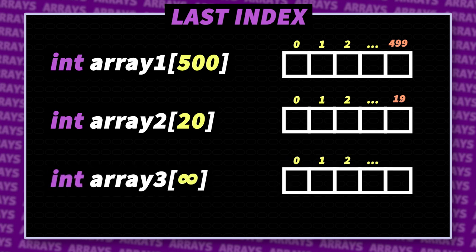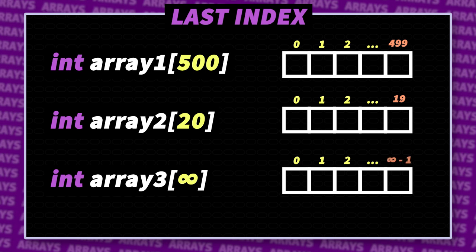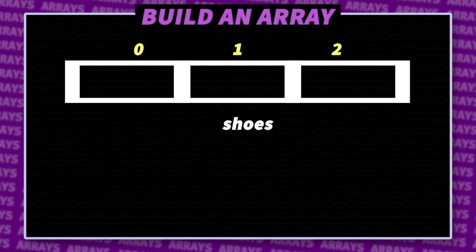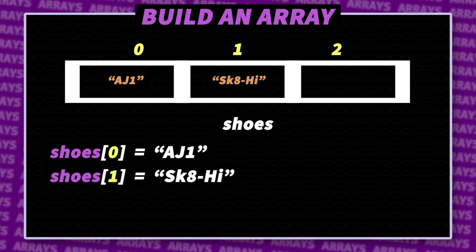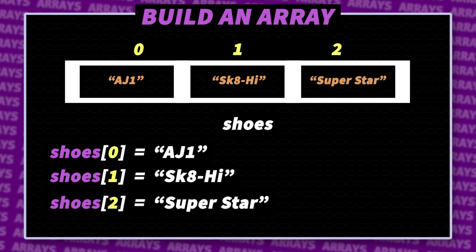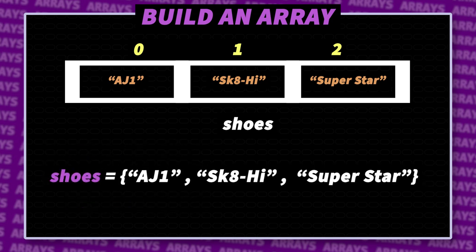For an infinity-sized array — not a real thing, but if it were, the last index would be infinity minus 1. Now let's get some shoes into the cubby. Using the index operator, we can put data into the array's compartments. At index 0, let's put AJ1. At index 1, let's put Skate High. And at the last index — size minus 1, which is index 2 — let's put Superstar. This is just one way to build an array, one item at a time. We can also put all the items into a single line. For a larger array, you'd use a loop to add huge amounts of data — and we'll get into loops in a couple more episodes.